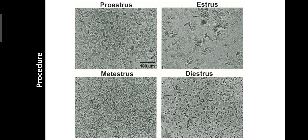These are the microscopic structures used to confirm the phases of the estrous cycle: proestrus, estrus, metestrus, and diestrus.